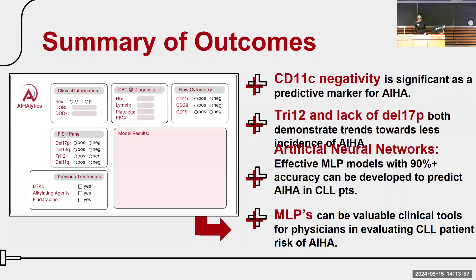To summarize: CD11C negativity is significant as a predictive marker for AHA. Trisomy 12 and deletion 17p demonstrated trends towards significance. We provided a step towards proof of concept that machine learning models could provide valuable clinical tools for prediction of AHA secondary to CLL. Next steps include developing a graphical user interface to aid clinician use of the model and prospective testing in prospective cohorts. Thank you. My poster number is 17.